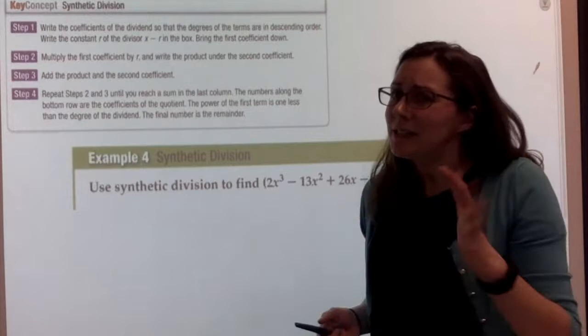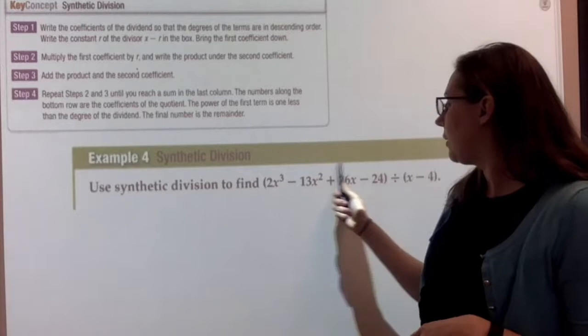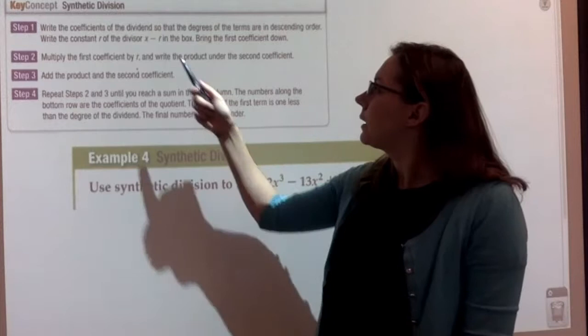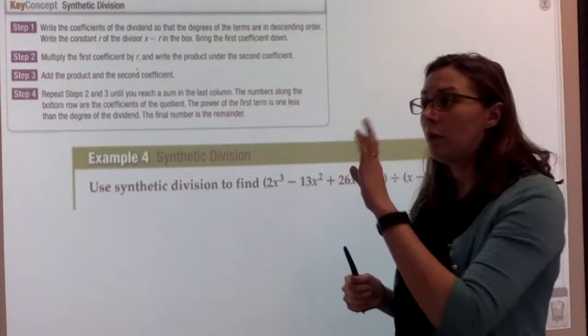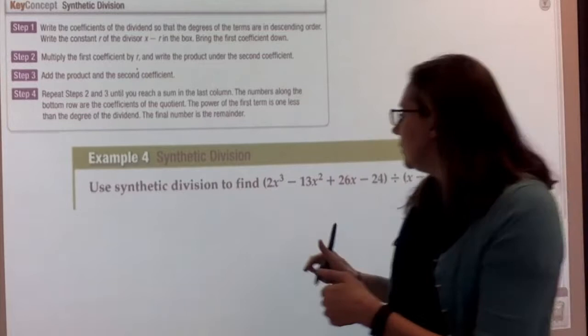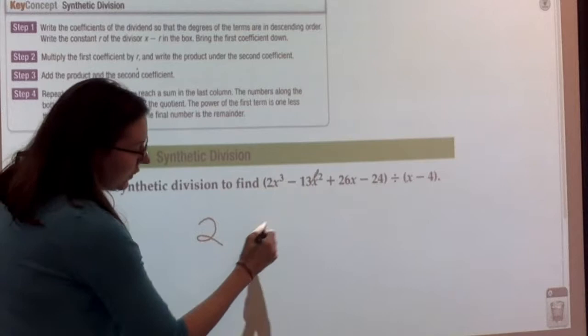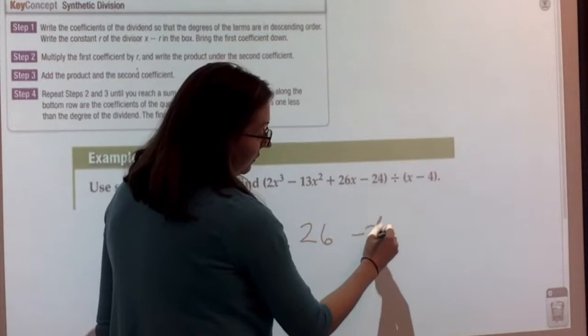So let's talk about how we do synthetic division. The first step — and it is kind of weird — is we're going to write the coefficients of the dividend, the polynomial we're dividing into. Not dividing by, but the one we're actually dividing into. The coefficients from the highest to the lowest degrees. So I see this is a third degree polynomial. I'm going to write the coefficients in order: the one attached to the third power, second, first, and then the constant. My coefficients are positive 2, negative 13, 26, and negative 24.